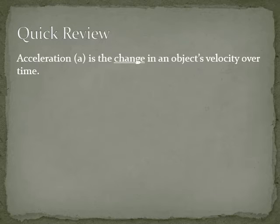Let's go through a quick review of acceleration. Acceleration, which is the variable a, is the change in an object's velocity over time. Change is underlined there because it's that delta v that matters. It's not the actual velocity but how much it's changing that makes an object accelerate.